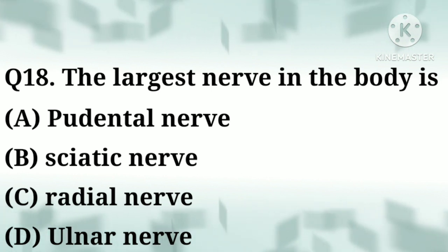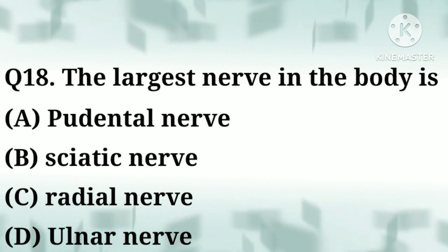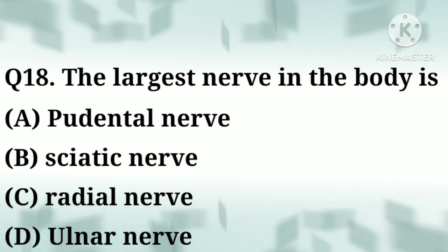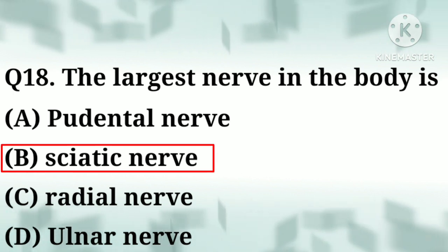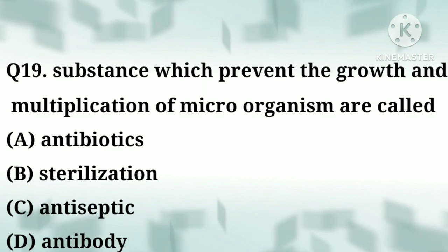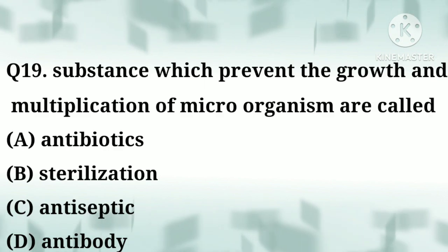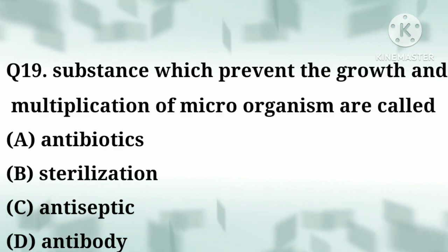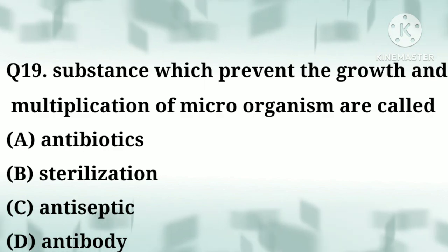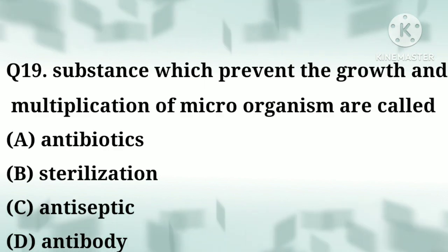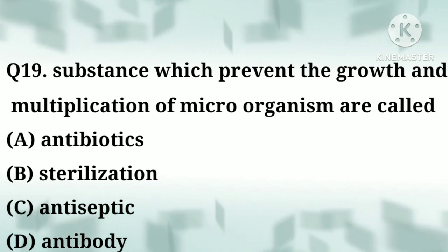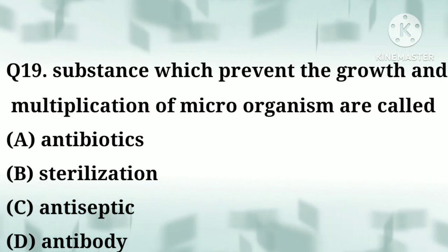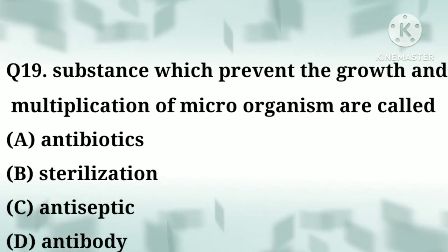Correct answer: option B, sciatic nerve. Question number nineteen: substances which prevent the growth and multiplication of microorganisms are called — option A: antibiotics, option B: sterilization, option C: antiseptic, option D: antibody.